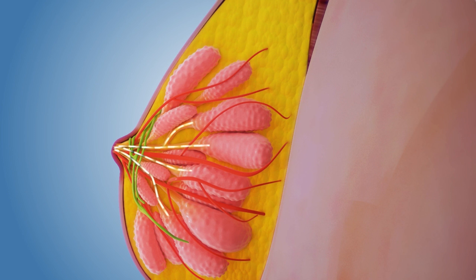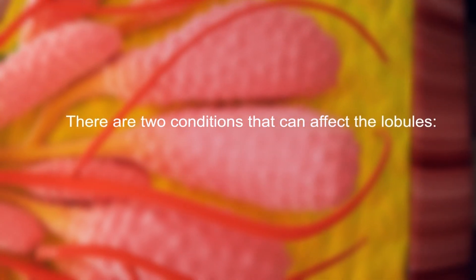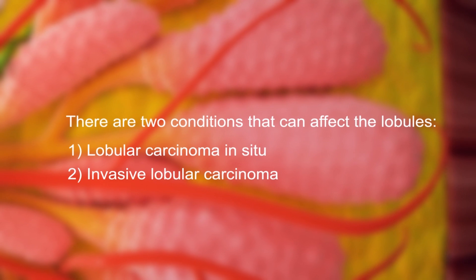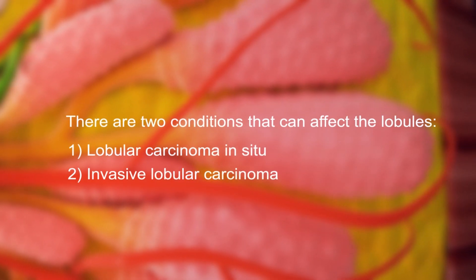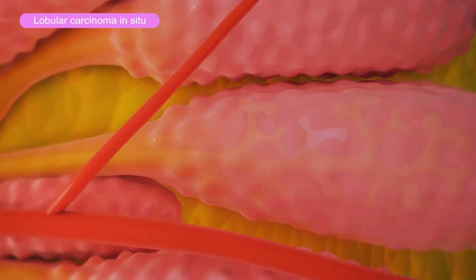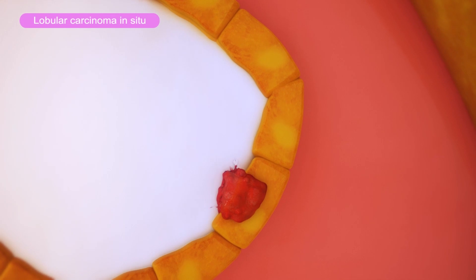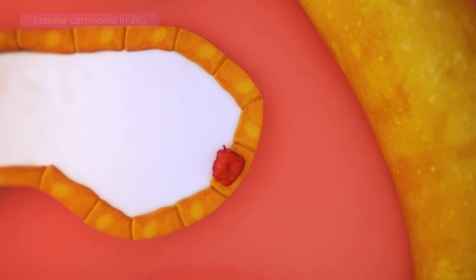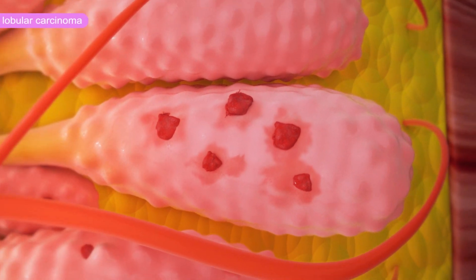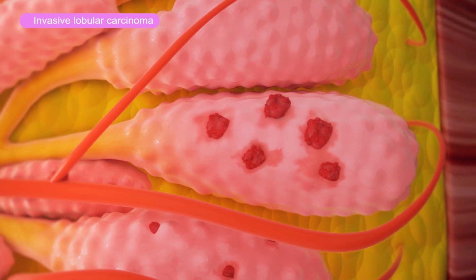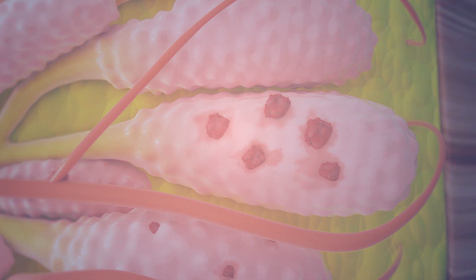Women's breasts contain glands called lobules, which are the glands that produce milk, which then moves through the ducts towards the nipple. There are two conditions that can affect the lobules: lobular carcinoma in situ, which results in abnormal growth of cells inside the milk-producing glands, and invasive lobular carcinoma, where the tumor moves outside through the wall of the lobule and invades surrounding breast tissue. It is the second most common type of breast cancer after invasive ductal carcinoma.